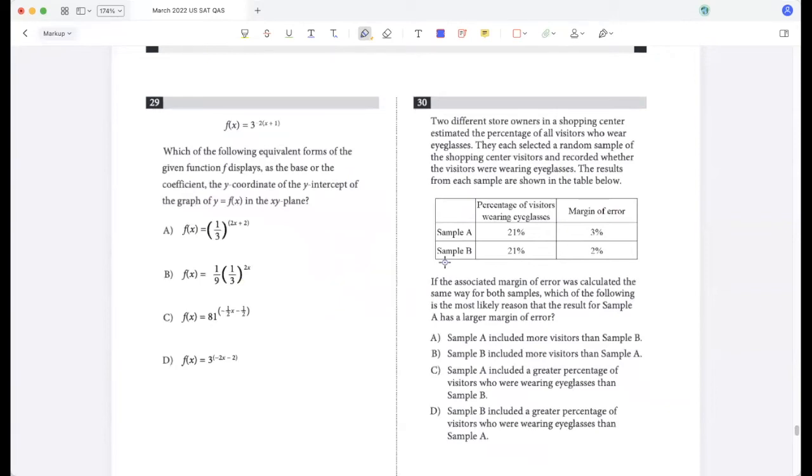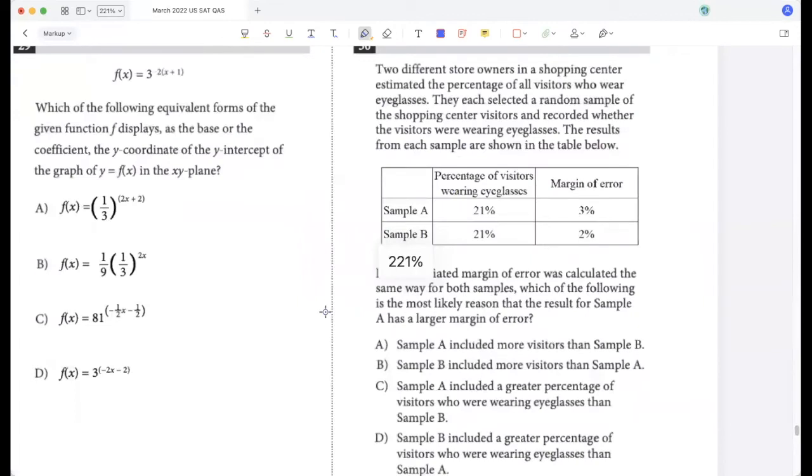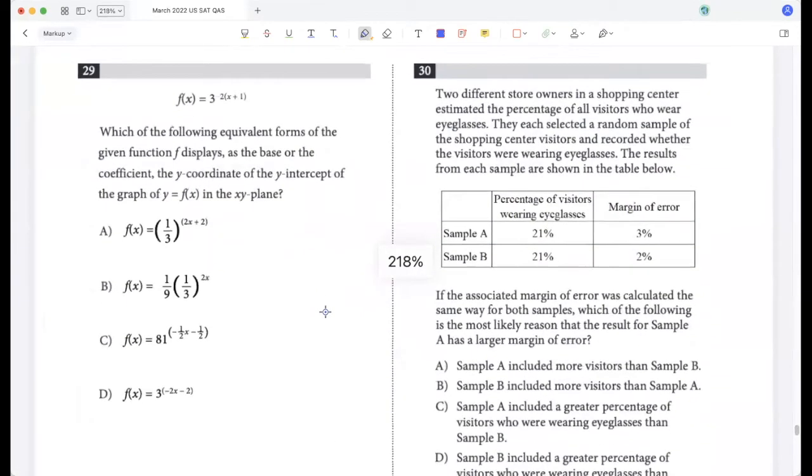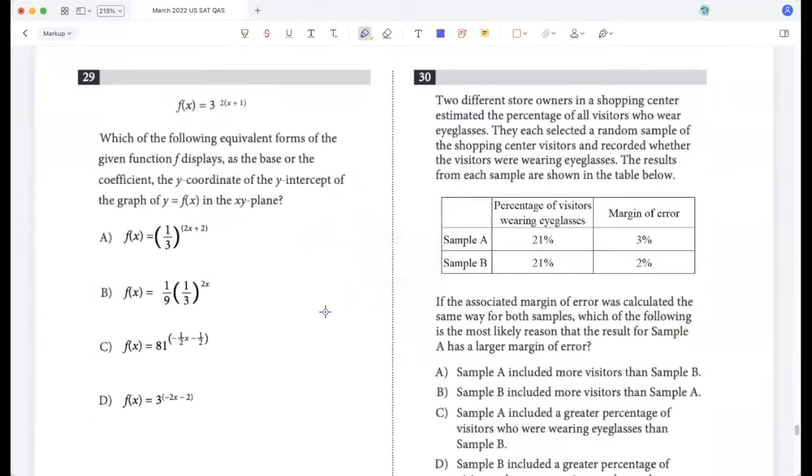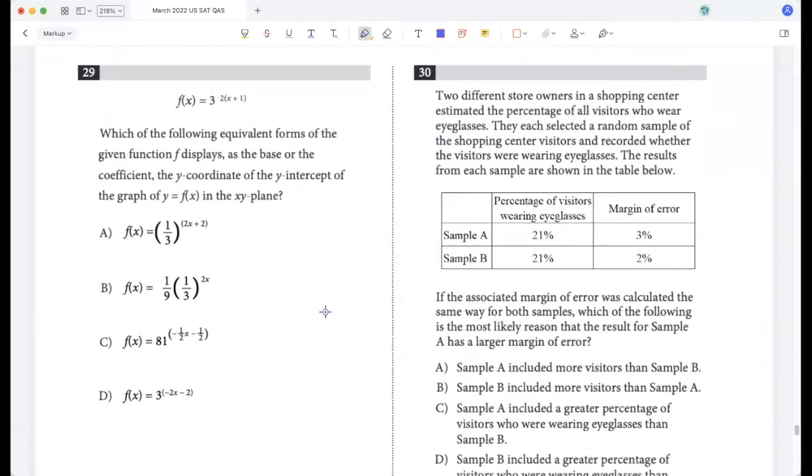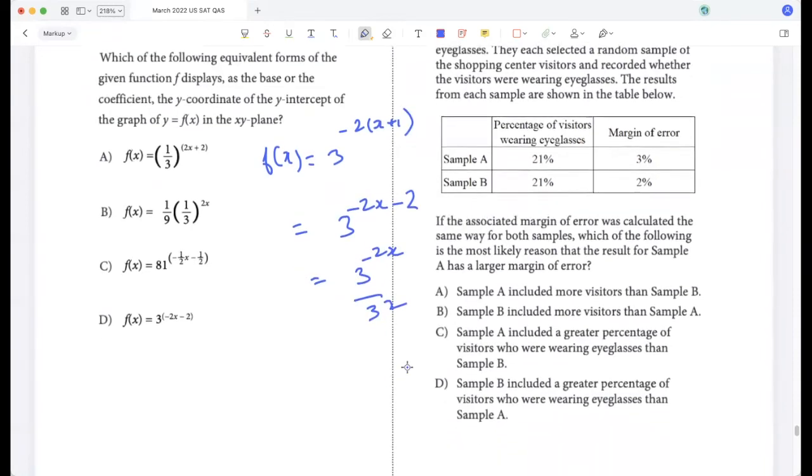f(x) is, what does it say here, 3 to the power negative. Which of the following equivalent forms of the given function displays as the base or the coefficient the y coordinate? So f(x) is 3 to the power minus 3 to the power minus 2x plus 1, so that's 3 to the power minus 2x minus 2.